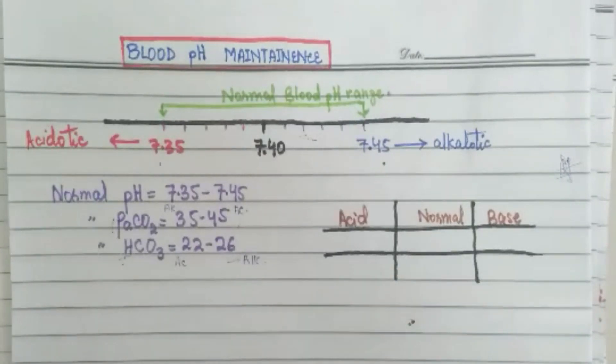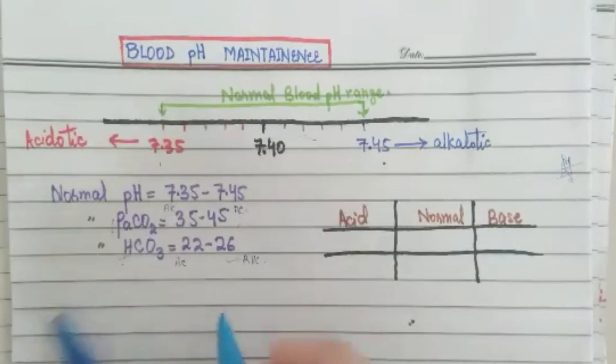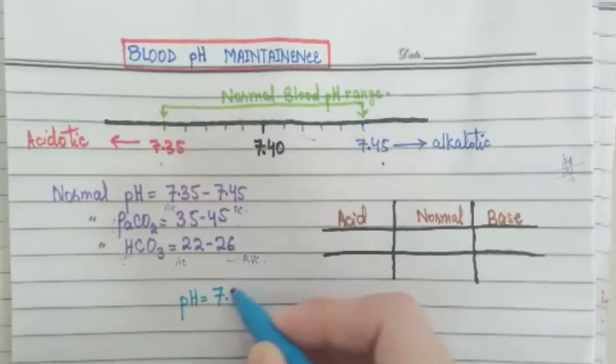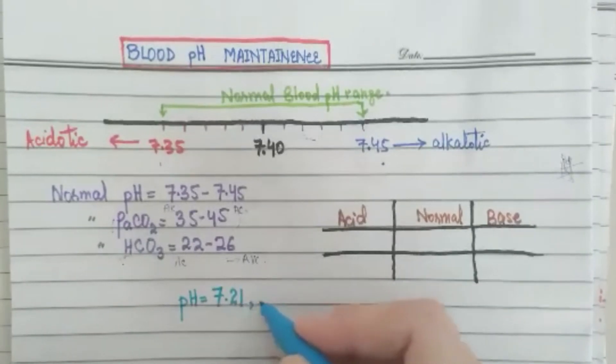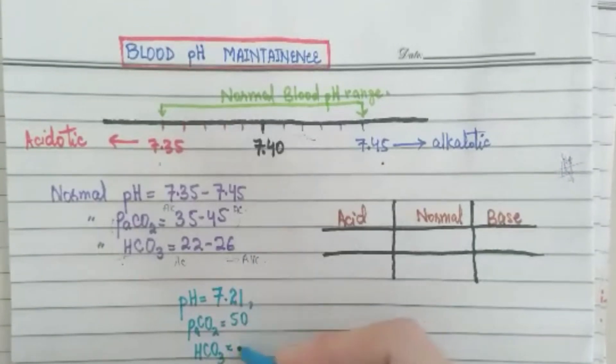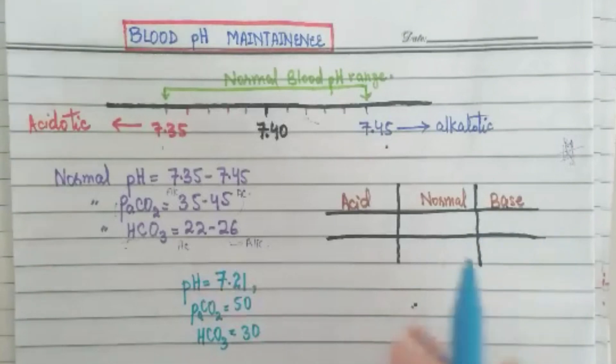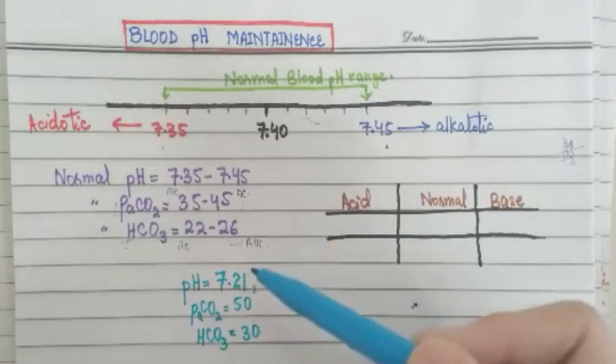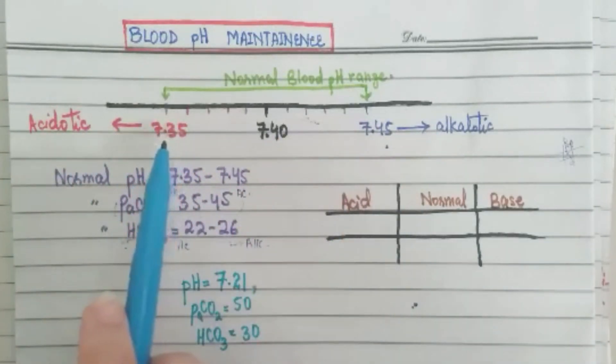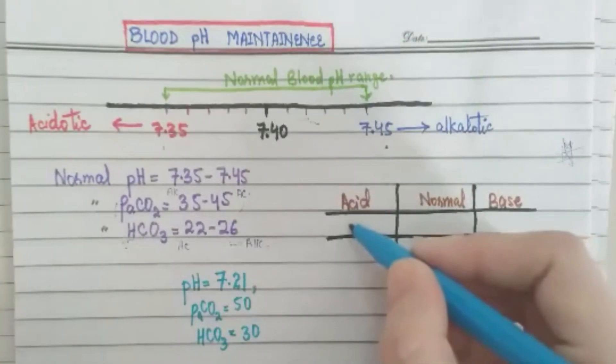If we have a pH of 7.21, and partial pressure of carbon dioxide is 50, and bicarbonate is 30. Normal is 7.35 to 7.45 so this is less. So which side? Acidosis. This is less. See, 7.21 is less than 7.35, so acidotic. So pH is in the acid range.